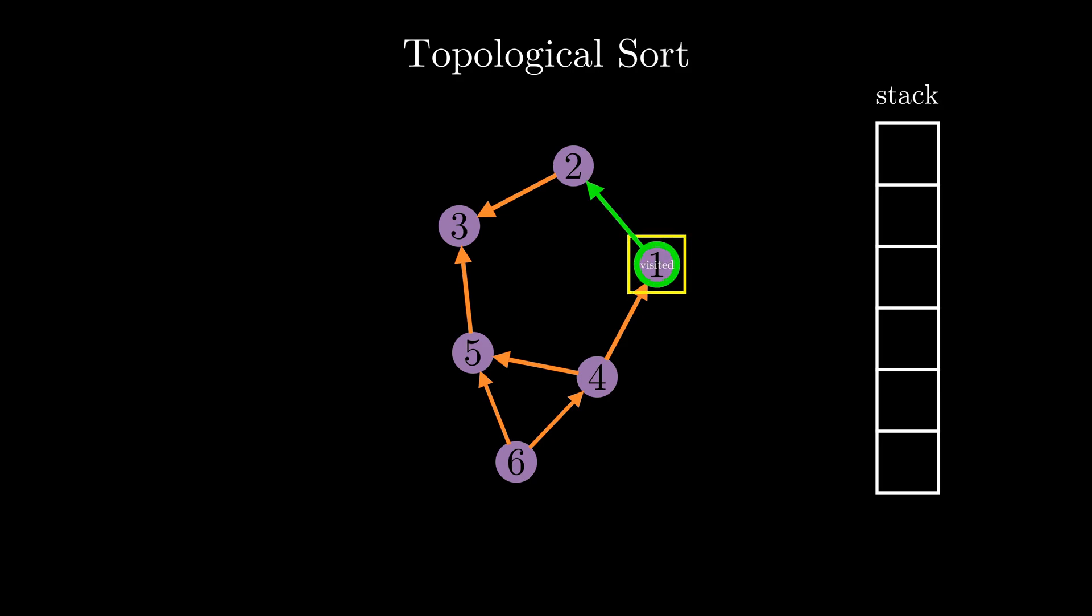When considering topological sort, there are some constraints that we need to take into consideration. That is, topological sort can only be done on directed acyclic graphs or DAGs.